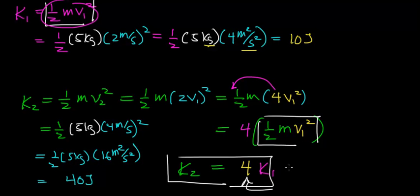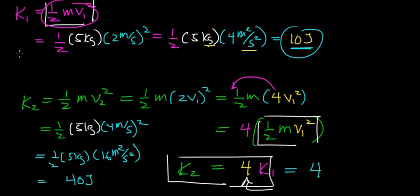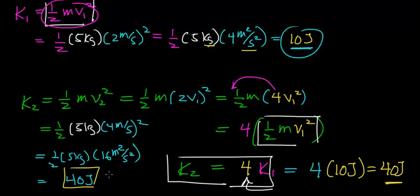So if we look at this calculation, the kinetic energy of the object when initially traveling at 2 meters per second worked out to be 10 joules. We can rewrite K2 as 4 times K1, which is 4 times 10 joules, which works out to be 40 joules — matching perfectly with our actual calculation.